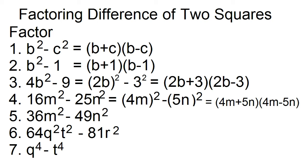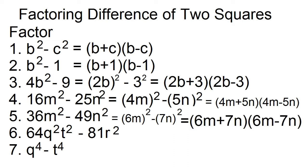Number five: factor 36m squared minus 49n squared. This can be written as the square of 6m minus the square of 7n. The factors are 6m plus 7n and 6m minus 7n.